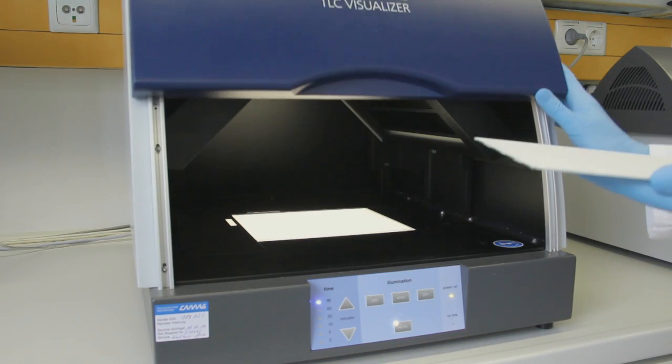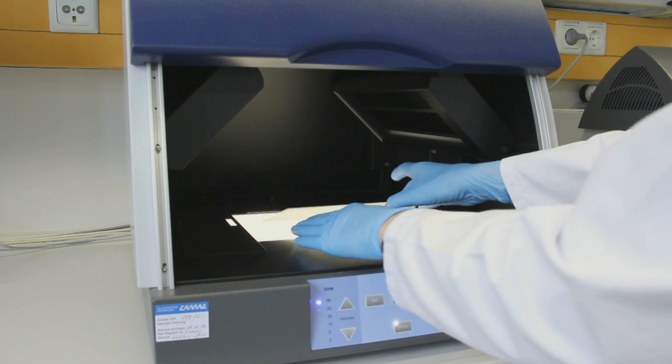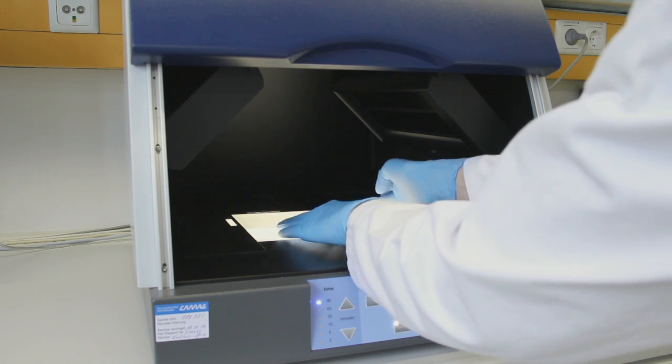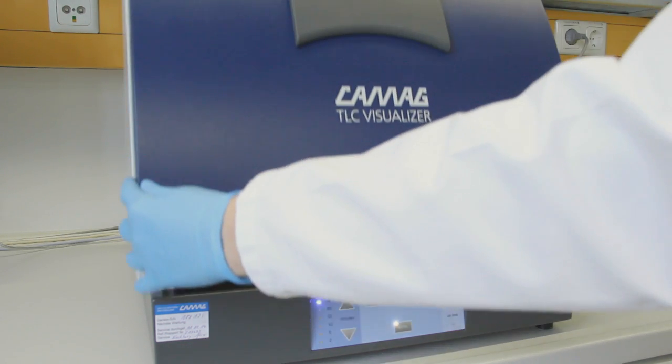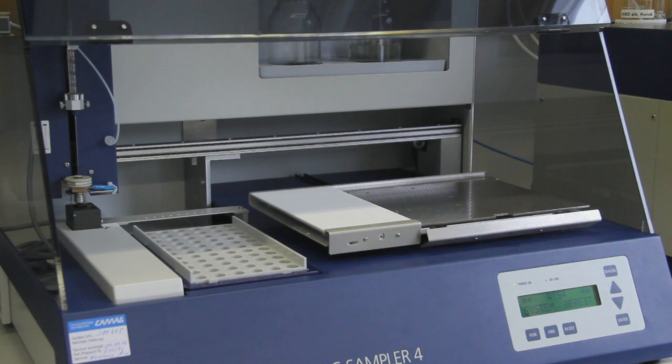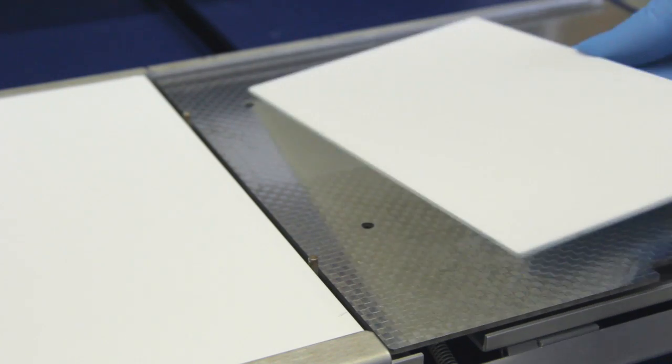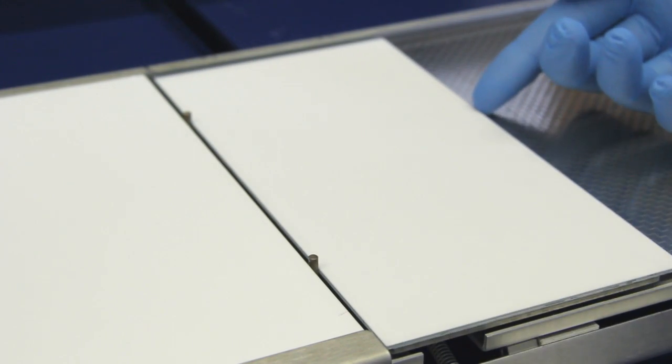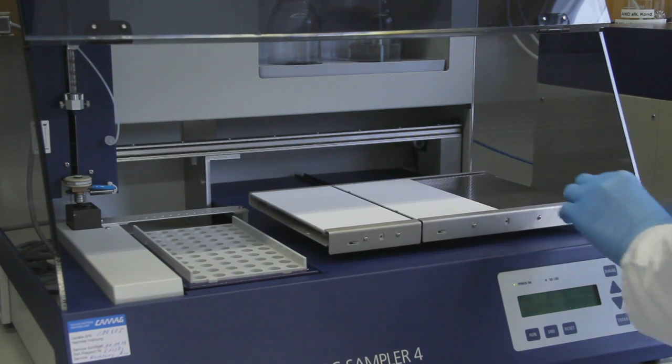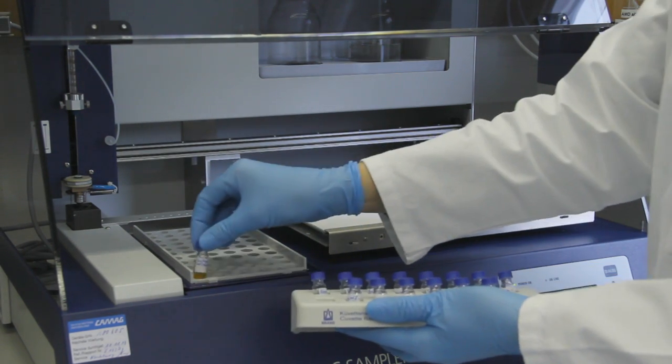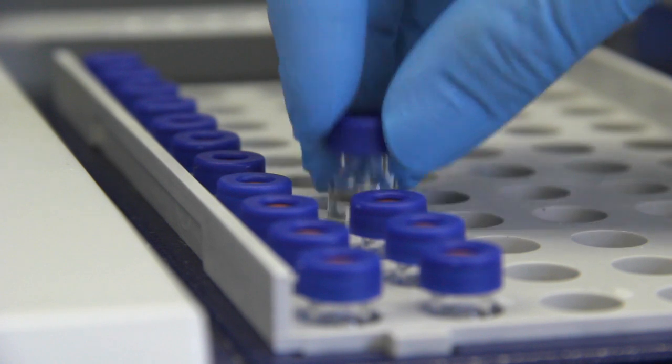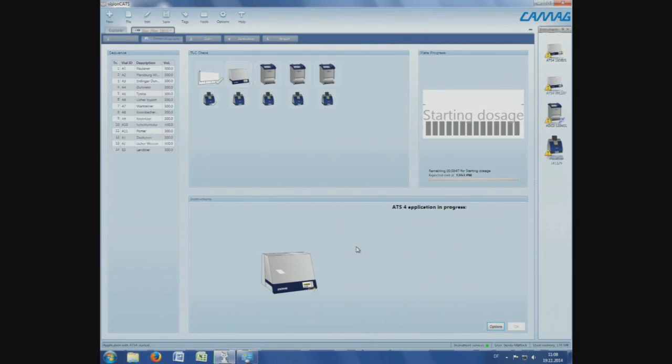Before the application, the clean HPTLC plate was documented in VisionCATS using the TLC Visualizer. The degassed and diluted beer samples were applied using the automated TLC sampler ATS-4. After positioning of the plate and the solutions into the rack, the procedure for automated spray-on application using VisionCATS was started.